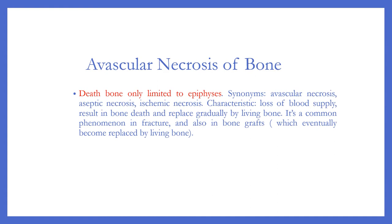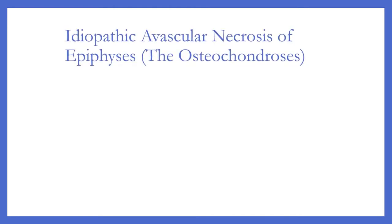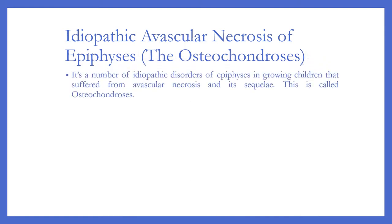Avascular necrosis is a common phenomenon in fractures and also in bone grafts, which eventually become replaced by living tissue. Idiopathic avascular necrosis of the epiphysis, or osteochondrosis, refers to a number of idiopathic disorders of the epiphysis in growing children that suffer from avascular necrosis and its sequelae.